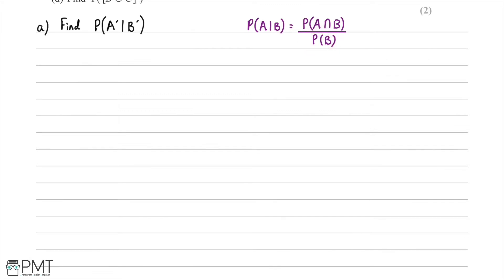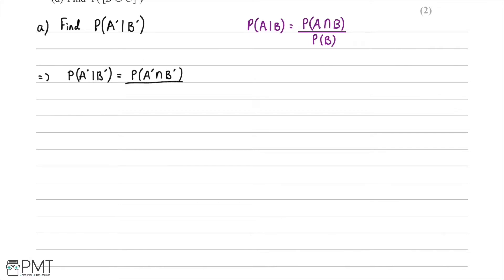This time we're looking at the complement, but this doesn't change the formula — we just replace A with A complement and B with B complement. So the formula we're going to use is: the probability of A complement given B complement equals the probability of A complement intersected with B complement, divided by the probability of B complement.